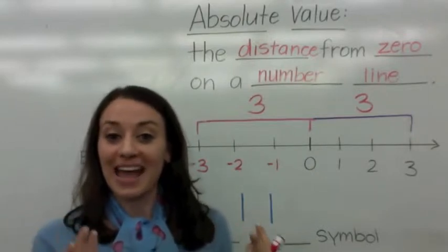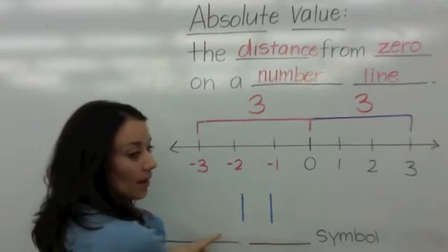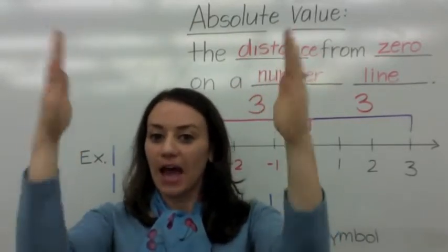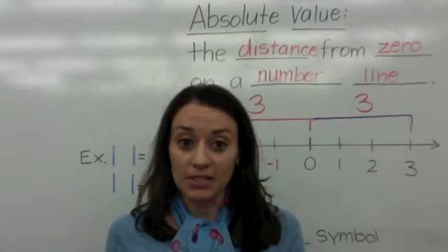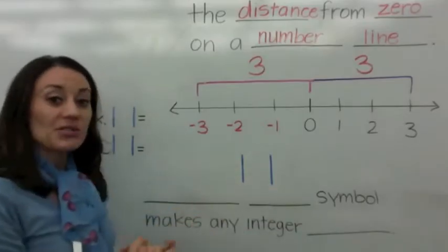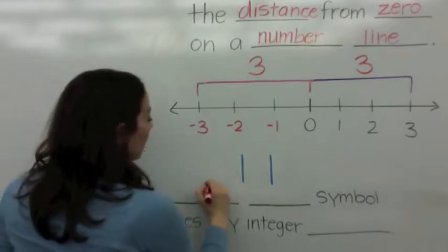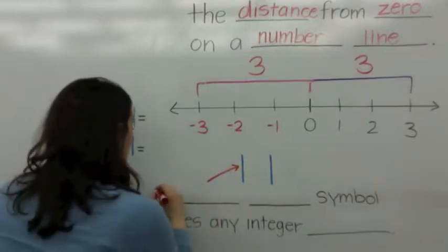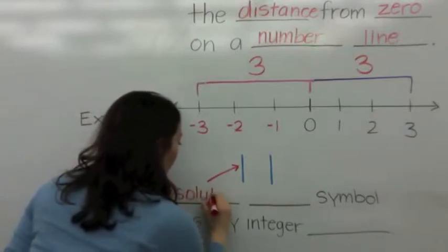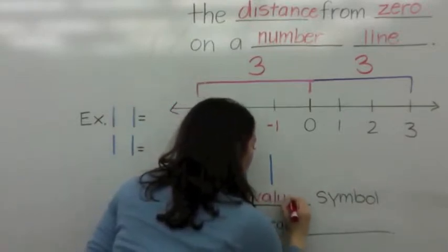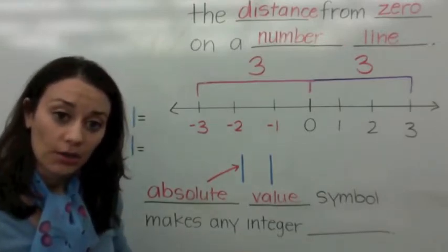So how do we represent this? Do you see these two lines like this? Make them with your arms. Say absolute value. Absolute value is distance. This is the absolute value symbol — it makes any integer positive.